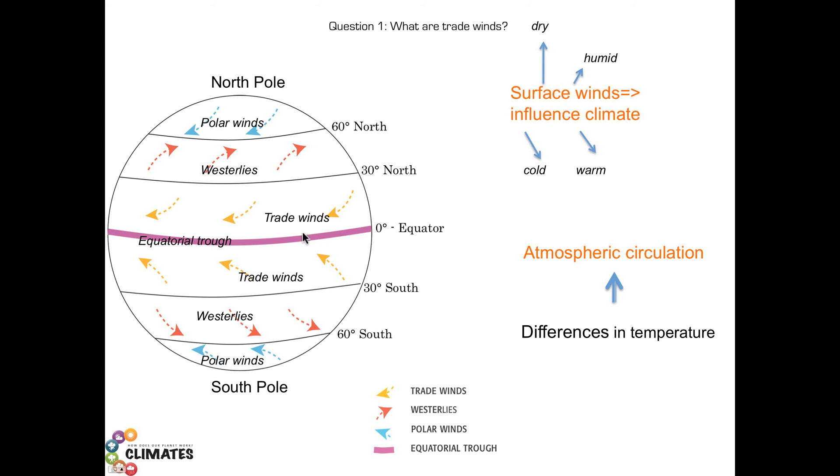We find winds called trade winds. The trade winds are coming from the east and going to the west. They come from the northeast in the northern hemisphere. In the southern hemisphere, these winds come from the southeast. But they always come from the east and go to the west.